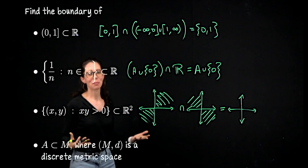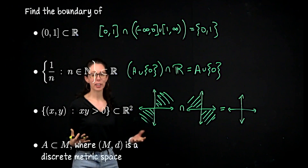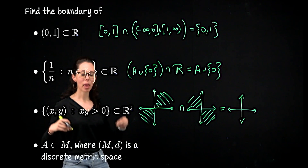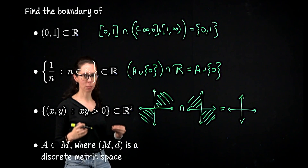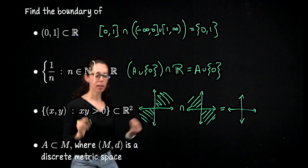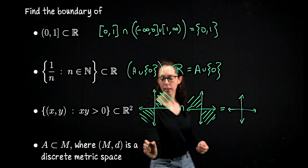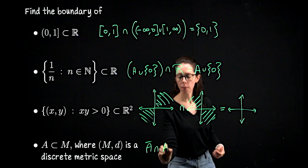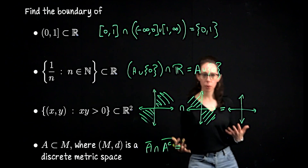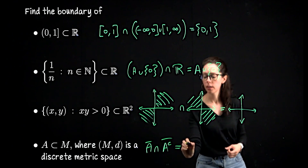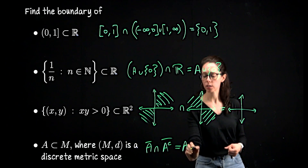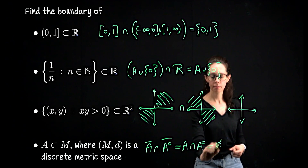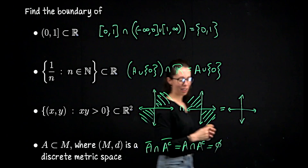For the last one, I'm not being too specific because it's a general result for discrete metric spaces. Any subset of a discrete metric space is closed, so no matter what A is and no matter what A complement is, they are both closed. I need to take the intersection of the set A and its complement, which is empty. So the boundary of any subset of a discrete metric space is empty.